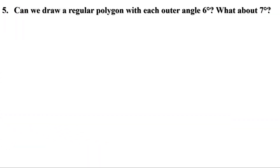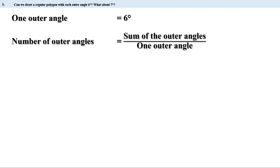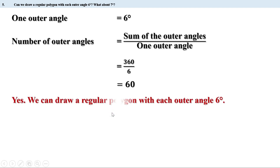Fifth problem. Can we draw a regular polygon with each outer angle equal to 6 degrees? What about 7 degrees? For the first case, one outer angle is 6 degrees. The number of outer angles equals 360 divided by 6, which is 60. Since 60 is a natural number, it can be the number of outer angles of a polygon. Therefore, we can draw a regular polygon with each outer angle 6 degrees — it would be a regular polygon of 60 sides.